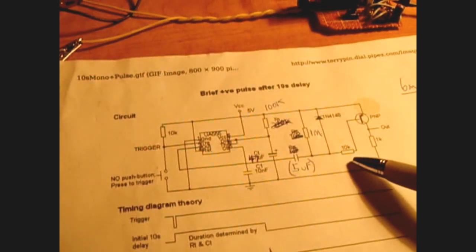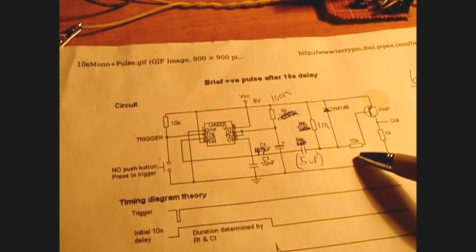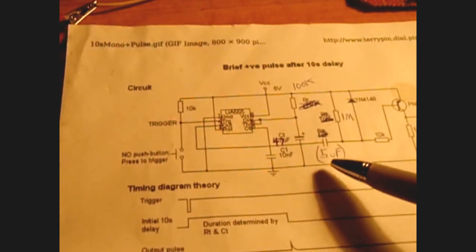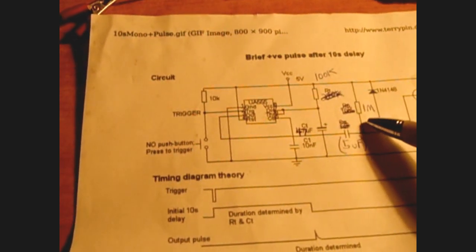Now if you're looking for a longer pulse duration, mine is only going to pulse for one second. You may want several seconds. You would have to increase the value of this capacitor and also adjust the value of this resistor right here.